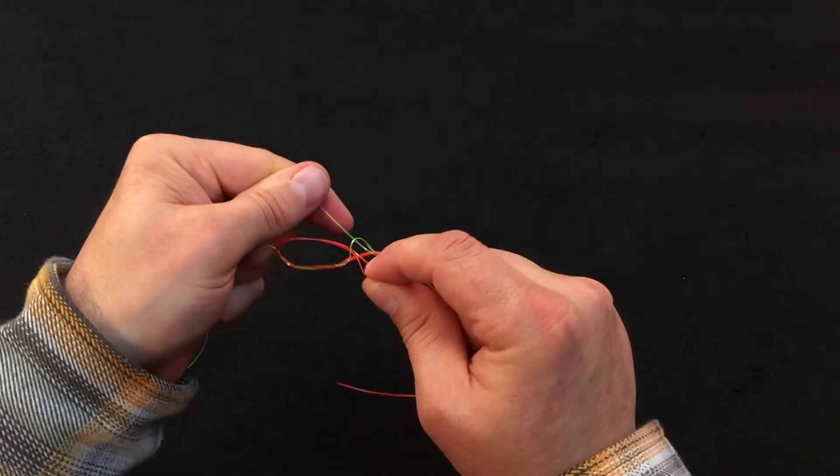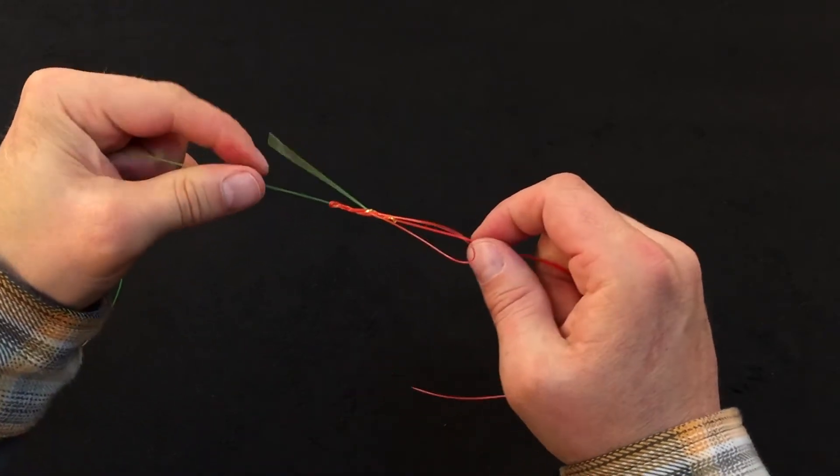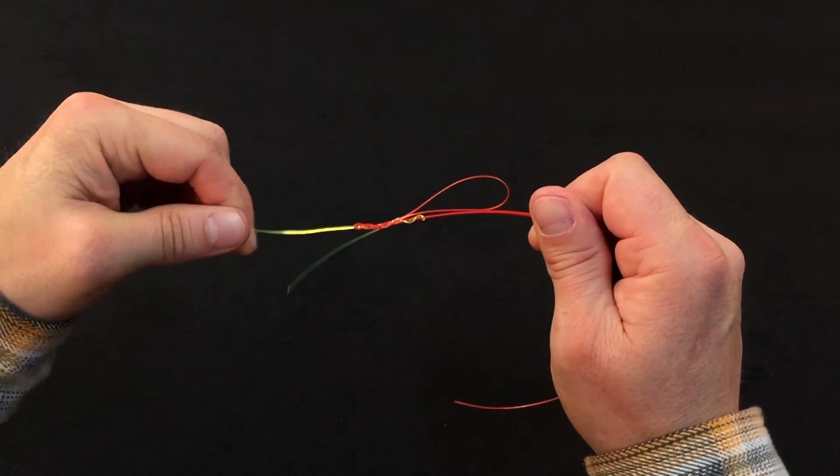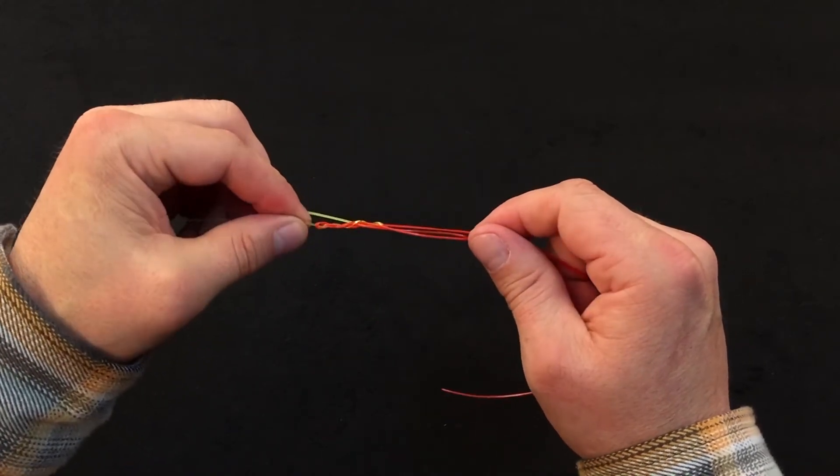We want to take both tag ends and draw the slack out of the knot. Trying to eliminate as much slack from this knot as possible is really going to aid us when we go to seat it.